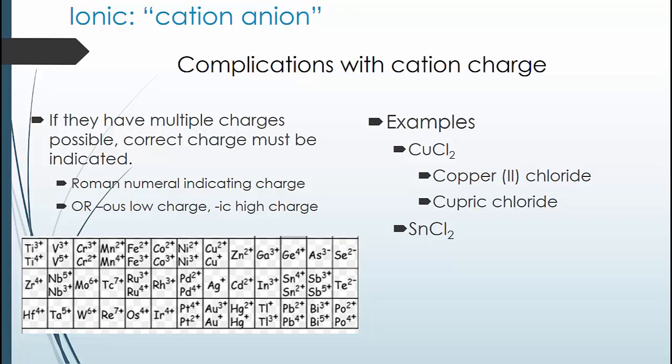Now let's look at the next one. Check your answer or try it for the first time if you haven't already. This is tin, and by using chloride, we can tell that it is a plus two charge tin. This is the lower charge of tin, so we call it tin chloride, or we can name it with the o-u-s ending and call it stannous chloride.